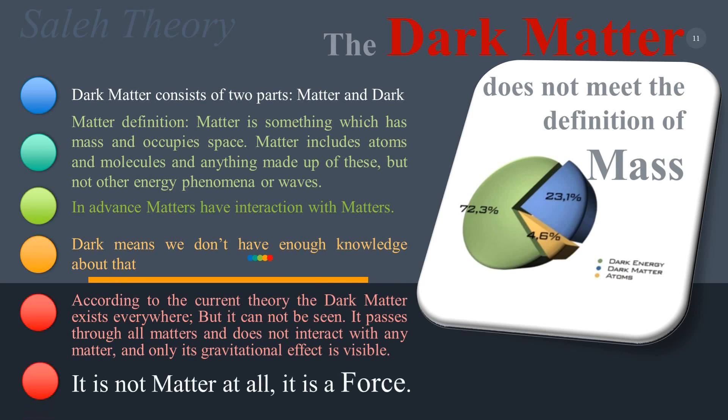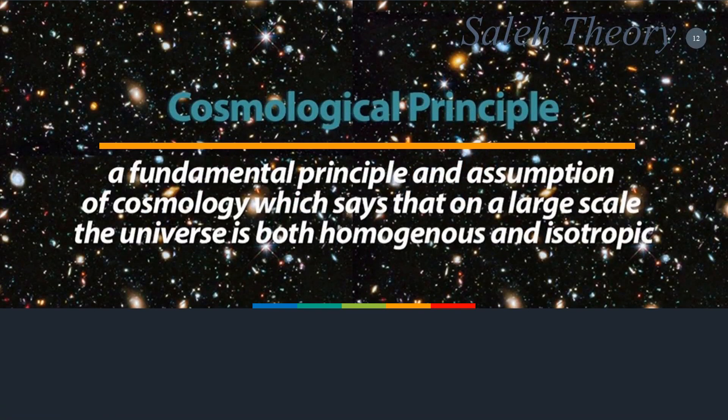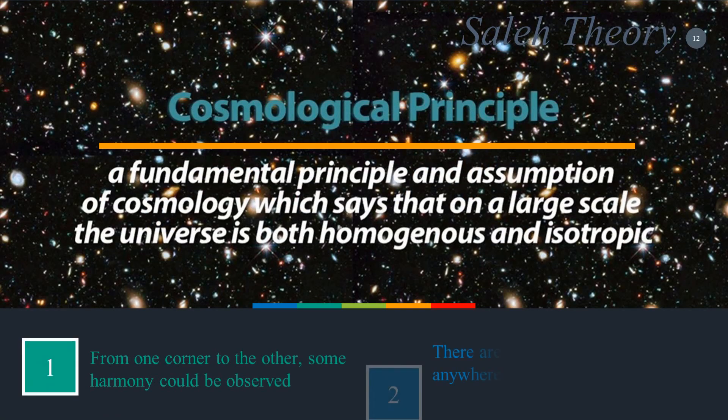Dark matter does not interact with any matter and only its gravitational effect is visible, so it is not matter at all — it is a force. The cosmological principle is the notion that the distribution of matter in the universe is homogeneous and isotropic when viewed on a large enough scale.